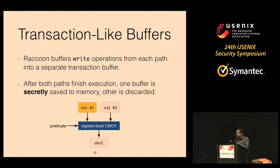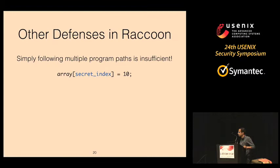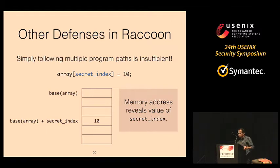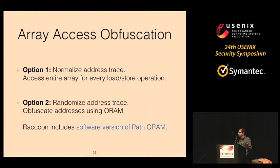Stepping back, this idea of following multiple paths is essentially control flow normalization. There is also the component of data flow accesses that may leak information. If a secret index is used to access a specific value in an array, an adversary observing the address trace who knows the base address of the array can figure out the value of the secret index. To prevent such information leaks along data-based side channels, Raccoon offers two options. The first is to normalize the entire address trace by iterating over the entire array for every single access.